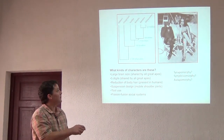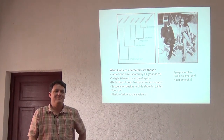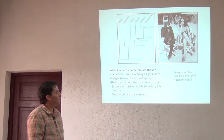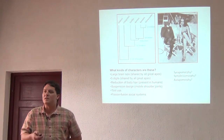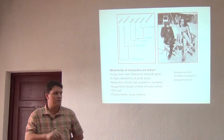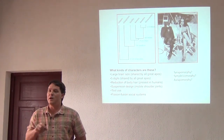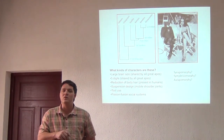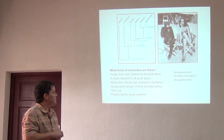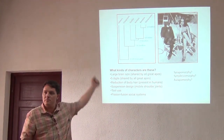Autapomorphy, right? It's only present in humans. Reduction of body hair, among the extant taxa, could be viewed as an autapomorphy. How about suspension mobile shoulder joints that allow brachiating? I think that is something present in humans — I'm not sure about chimps and bonobos, but definitely in gibbons. So that will be something that pops up in a couple different places.